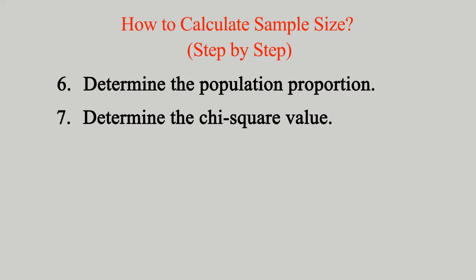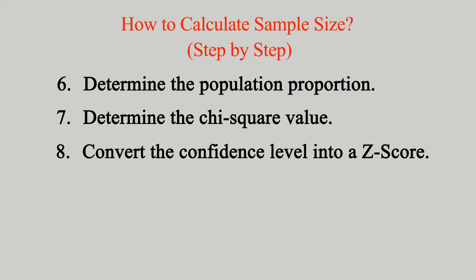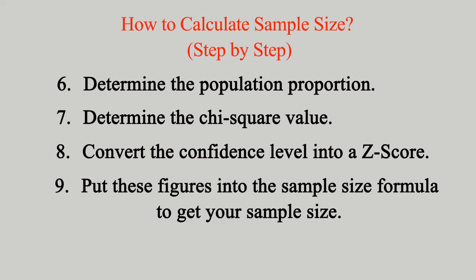Step 5: Determine the alpha level, aka significance level. Step 6: Determine the population proportion, which can be used from previous survey results or be collected by studies. Note, if unsure, one can always use 0.5 as a conservative approach and it will give the largest possible sample size.